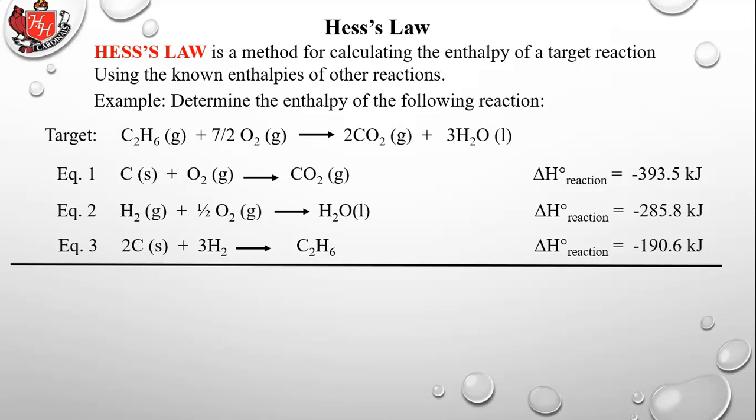We have three known reactions: (1) C + O2 → CO2, delta H = negative 393.5 kJ; (2) H2 + 1.5 O2 → H2O, delta H = negative 285.8 kJ; (3) 2C + 3H2 → C2H6, delta H = negative 190.6 kJ. We use the three principles of Hess's Law on these equations to derive the target equation and find its enthalpy.